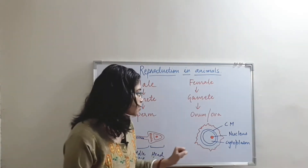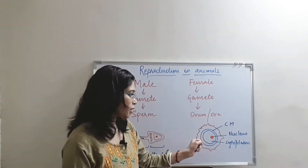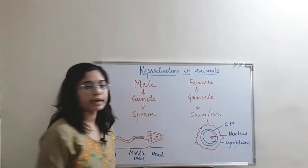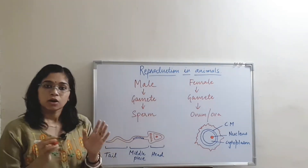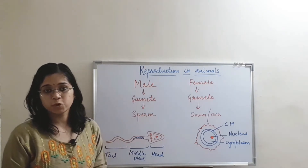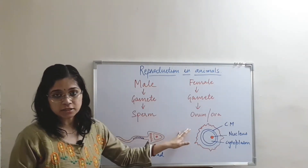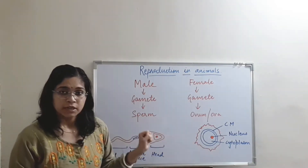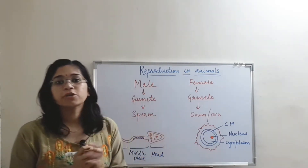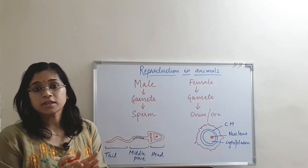The ovum is present here. This membrane is known as the cell membrane. It has a nucleus and a dense cytoplasm. The red portion indicates the protective layer around the ovum. A huge number of sperms are produced at a single time. The most motile sperm will reach and fertilize the ovum. It will discharge its nucleus into the ovum and both nuclei will form a structure known as zygote.